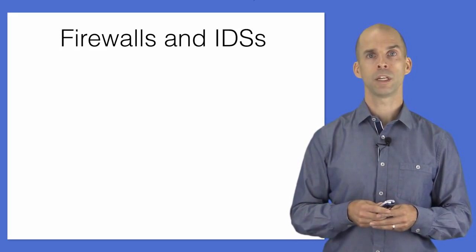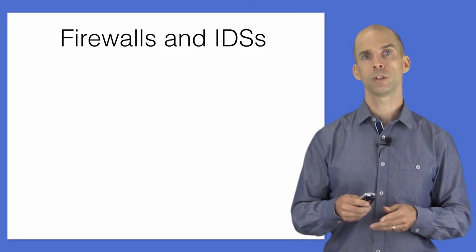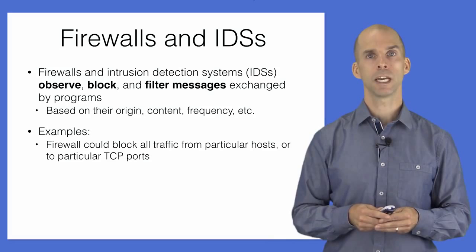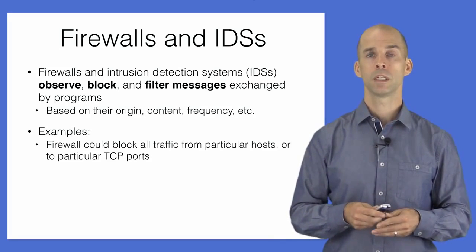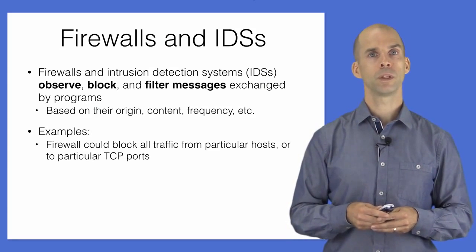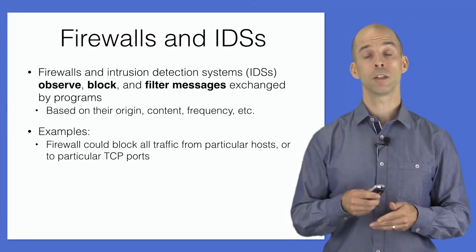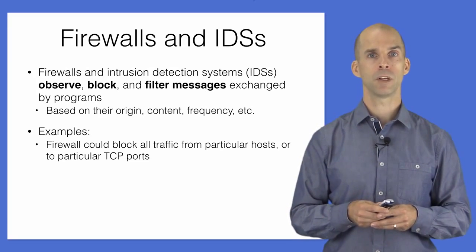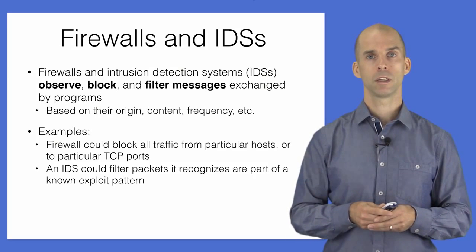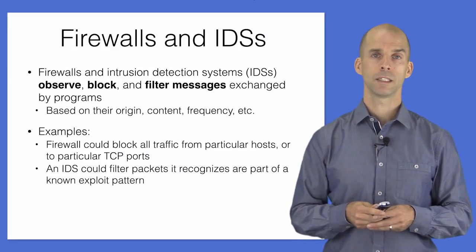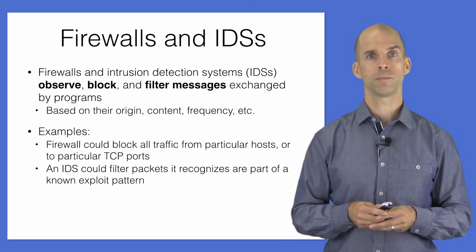Another popular security enforcement mechanism is a network monitor, like a firewall or intrusion detection system (IDS). A firewall generally works by blocking connections and packets from entering the network — for example, blocking all attempts to connect to a network server except those listening on designated ports, such as TCP port 80. Firewalls are particularly useful when software is only intended for local users. An IDS provides more fine-grained control by examining the contents of network packets, looking for suspicious patterns, and can filter out crafted attack packets.